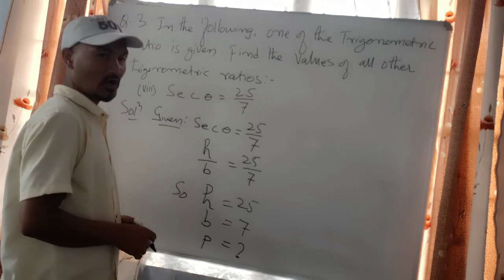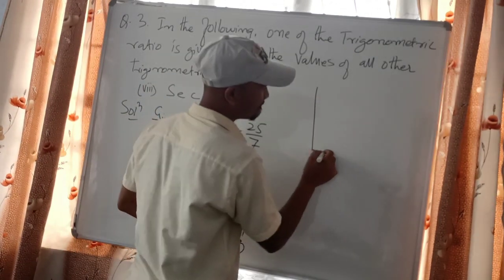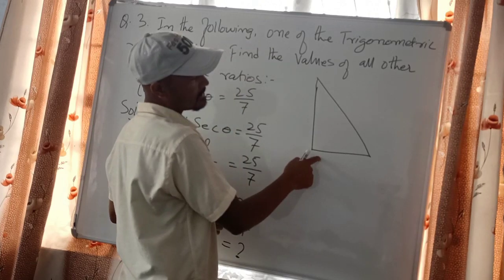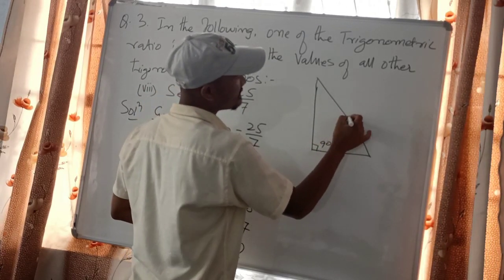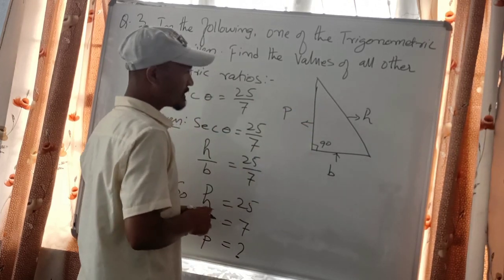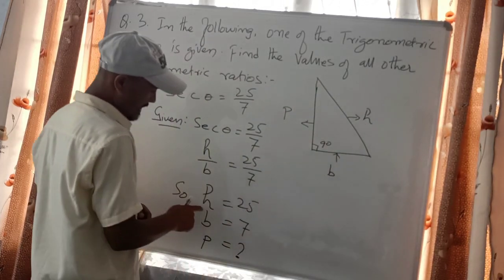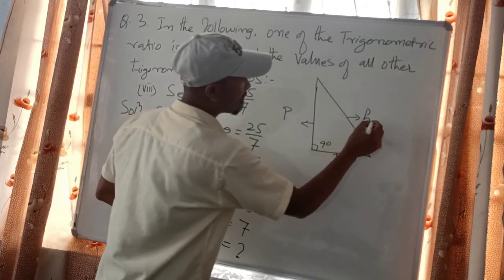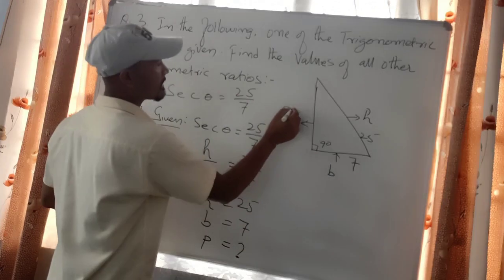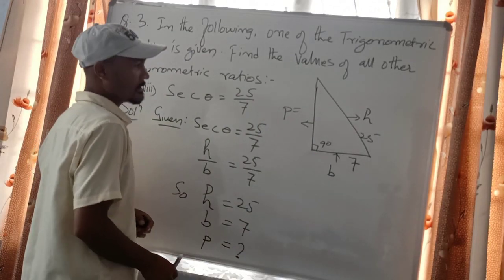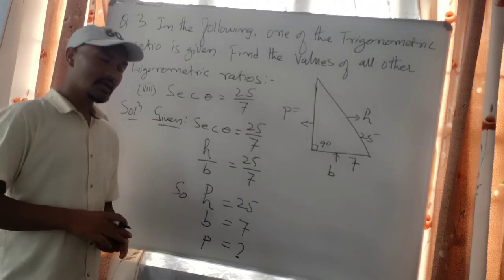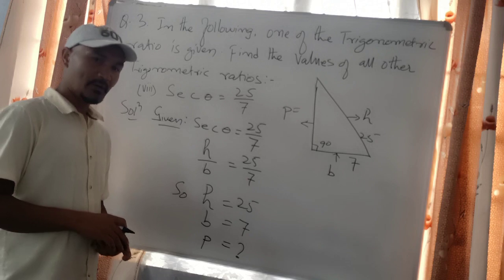We need to find the perpendicular. Let us draw the right angle triangle. In the right angle triangle, the 90-degree angle is opposite the hypotenuse. The hypotenuse is 25 and the base is 7, so we need to calculate the perpendicular using the available values.